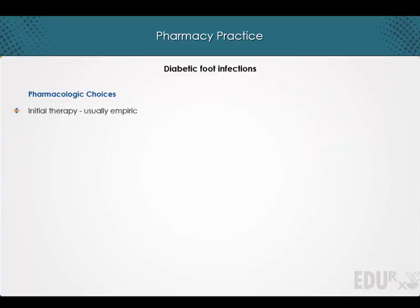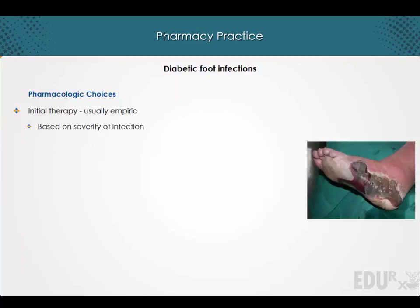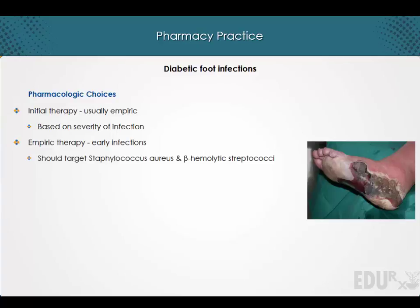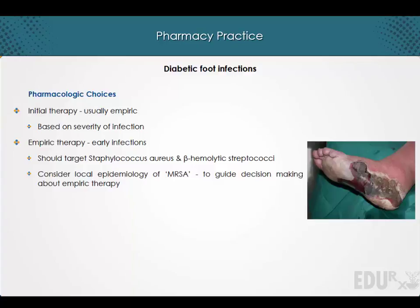Initial therapy is usually empiric and based on the severity of infection. Empiric therapy for early infections should target Staphylococcus aureus and the beta-hemolytic streptococci. However, it is important to consider local epidemiology of methicillin-resistant Staphylococcus aureus to guide decision-making about empiric therapy.